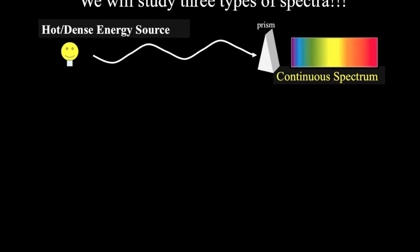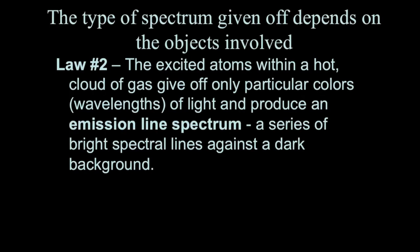To produce an emission spectrum, the atoms inside a hot, low-density cloud of material or gas have to be energized. In that case, only specific colors are produced, thus making an emission line spectrum which consists of certain colored lines on a black background.